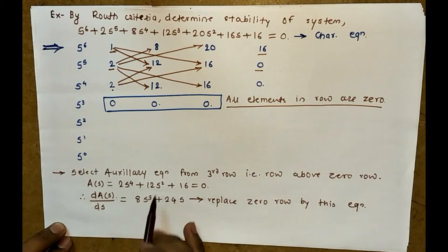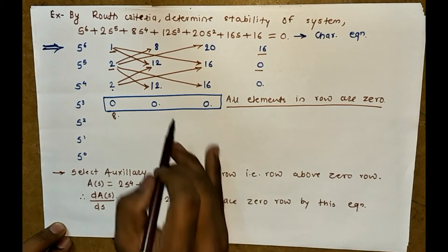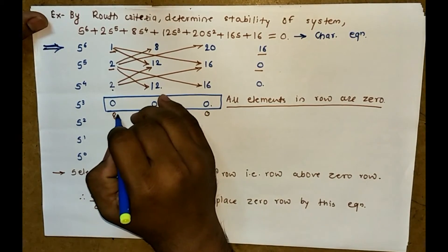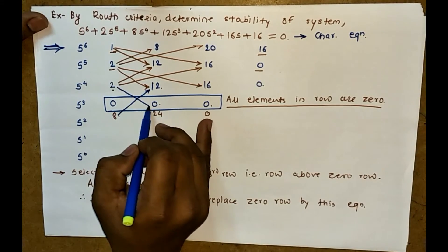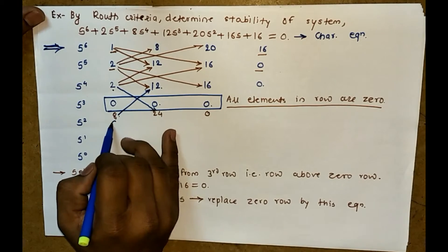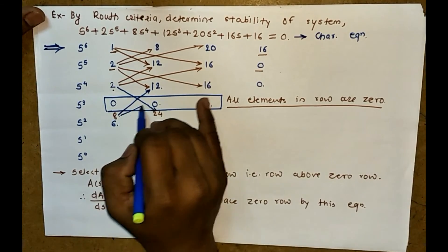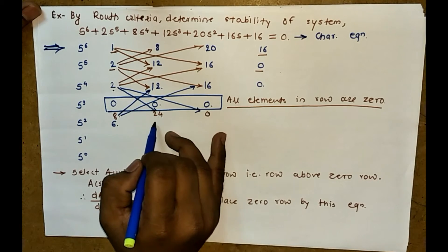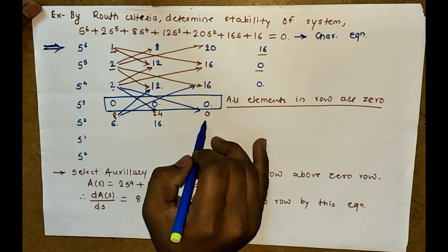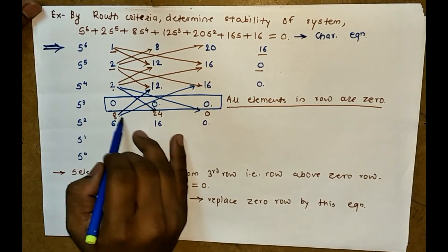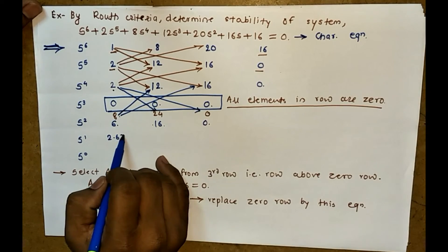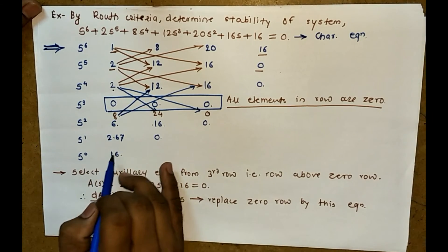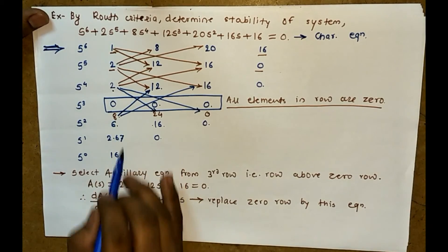You get 8s^3 + 24s. Now replace the zero row by this equation. So here s to the power 3 is 8 and s is 24. Now again follow the same rule: 8 into 12 minus 24 into 2 divided by 8, if you solve this you get answer equal to 6. Then 8 into 16 minus 2 into 0 divided by 8, you will get answer 16.